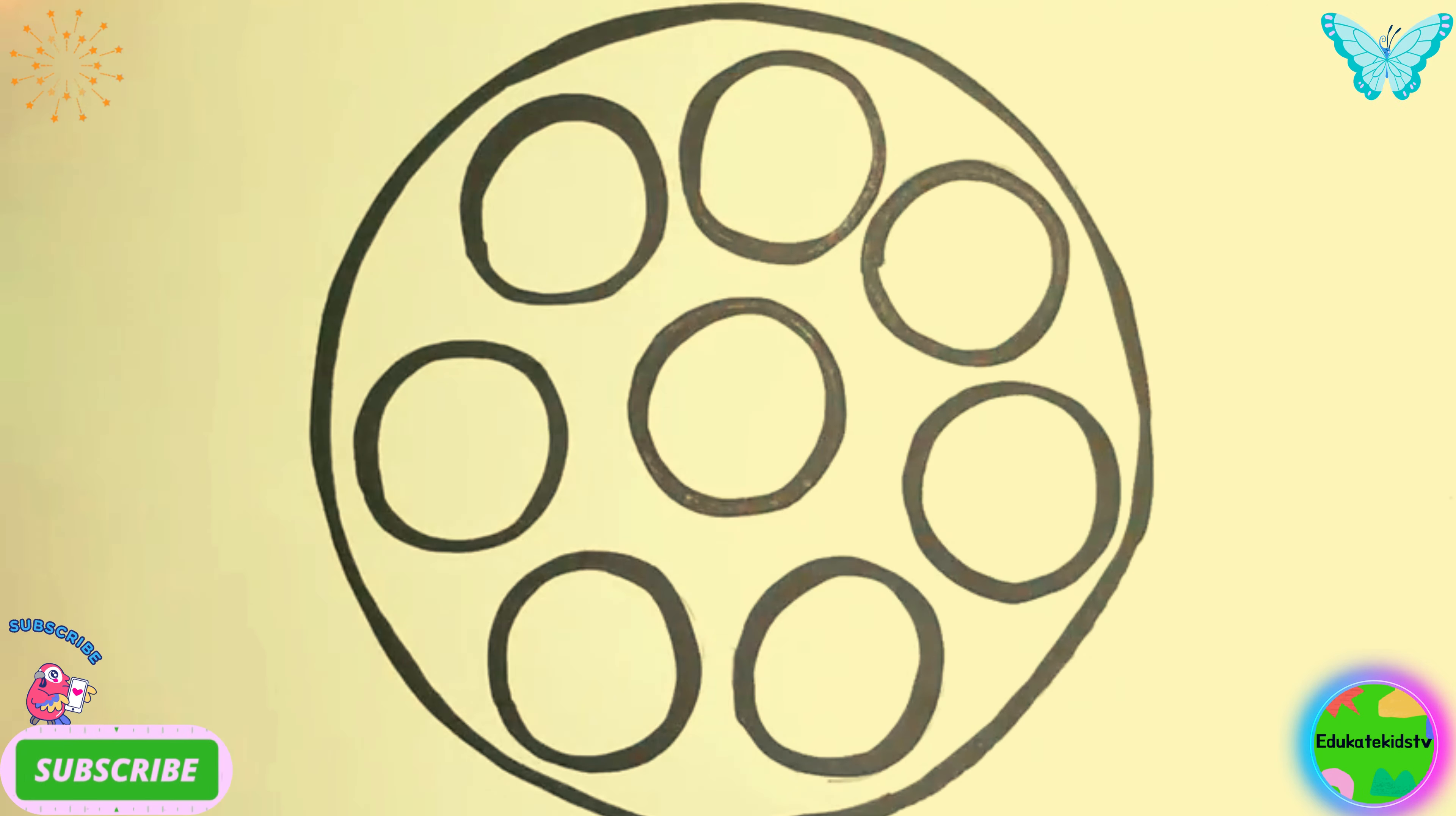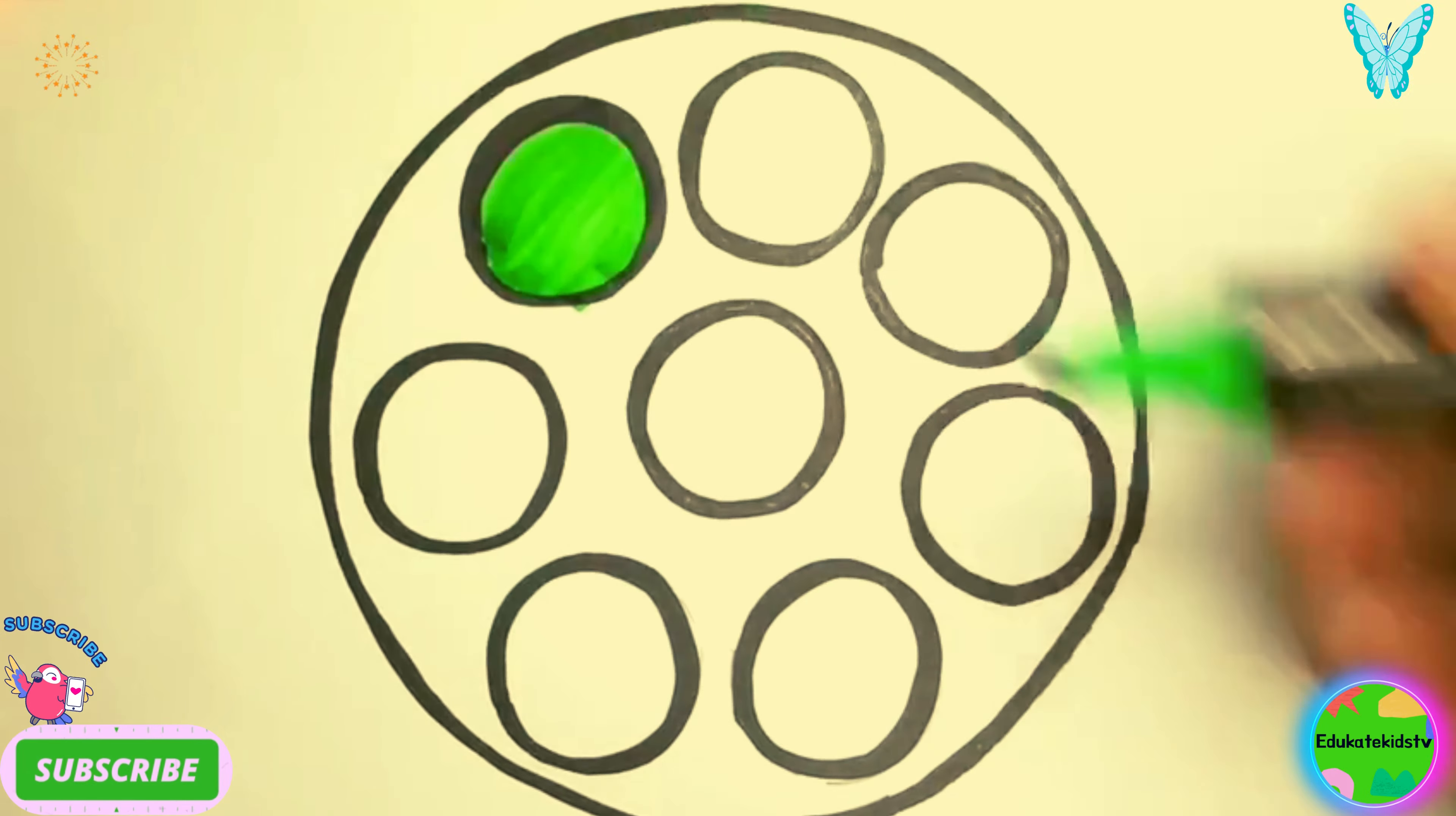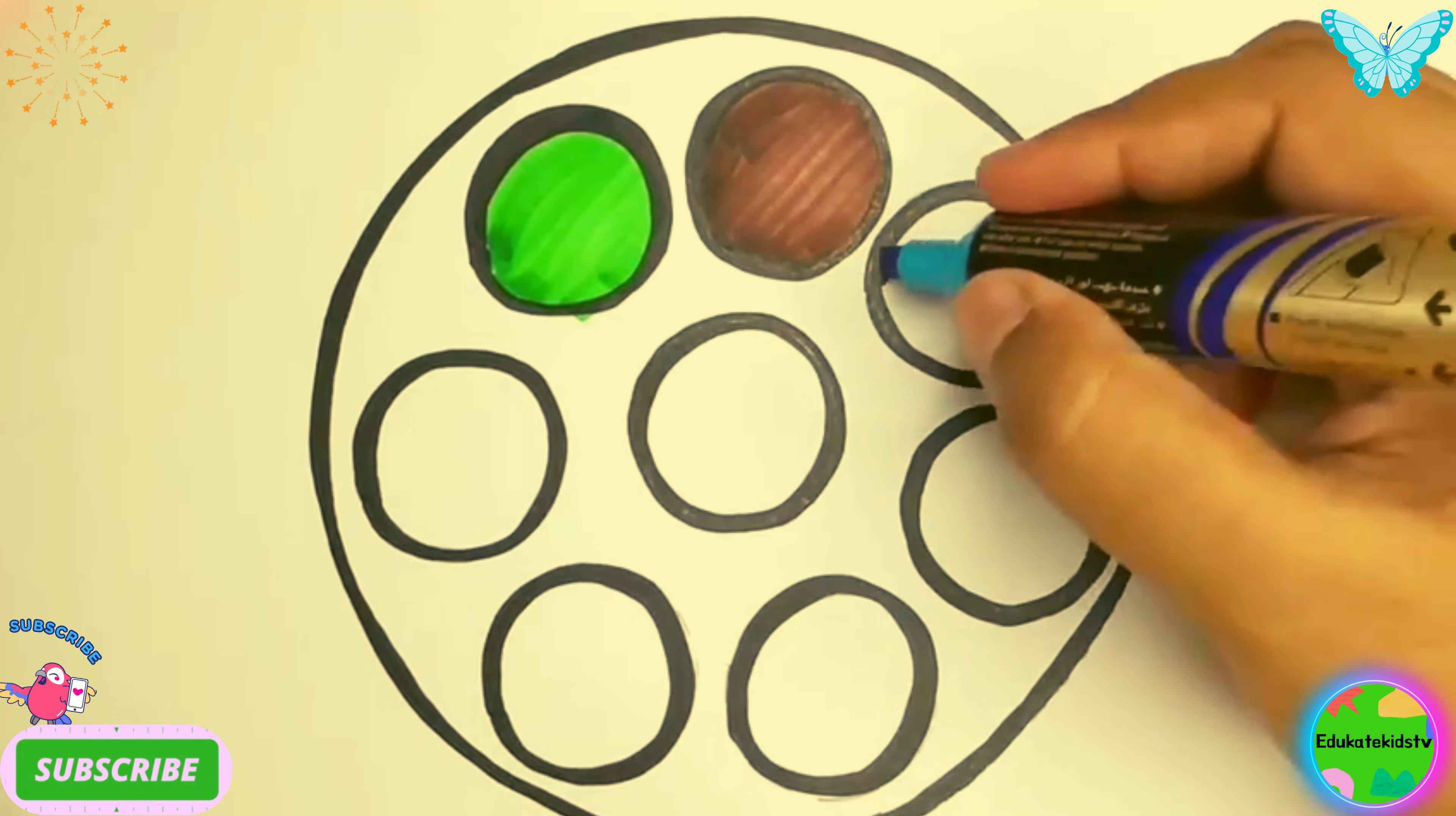Wow! Now let's color the small circles. Green color, brown color, blue color.